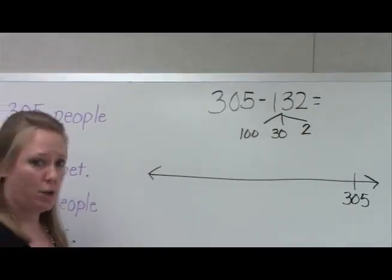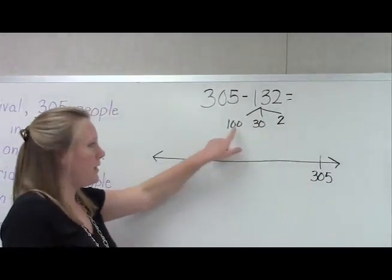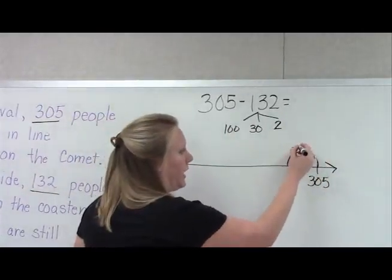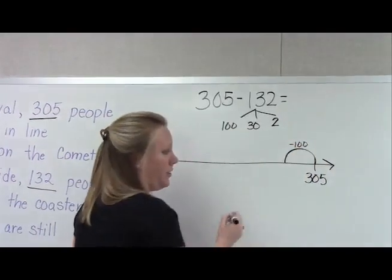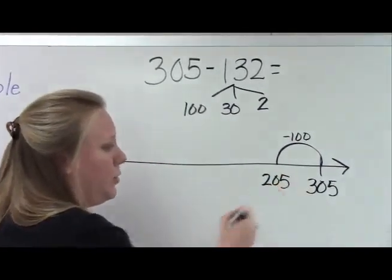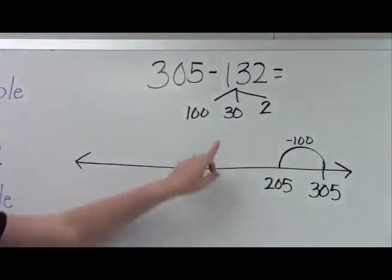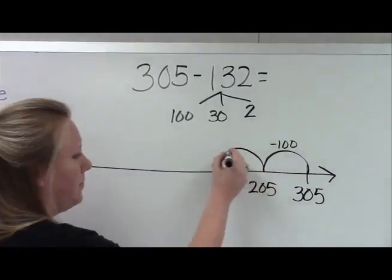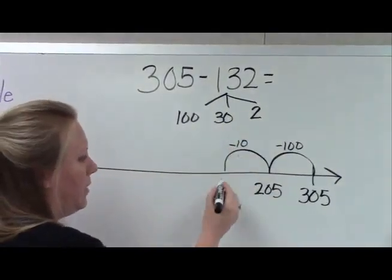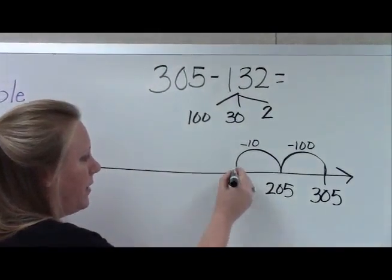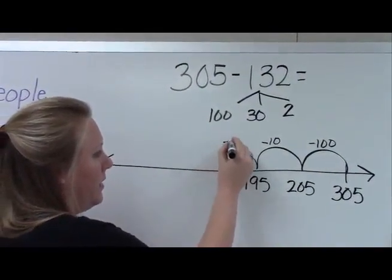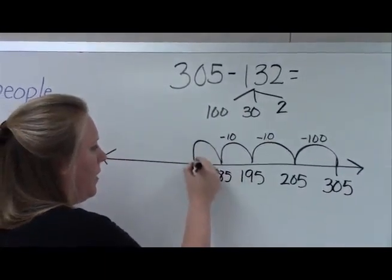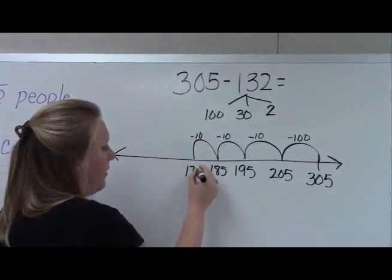So now I can start to subtract. Here's 305. The first thing I'm going to do is hop back 100. So you're going to jump back, we're going to label it minus 100, and then that means we would land on 205. Now we're going to hop back our three tens: minus 10 which gives us 195, another 10 which gives us 185, and then another 10 which gives us 175.